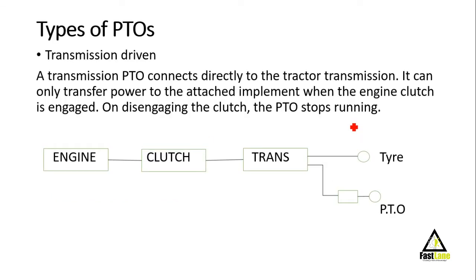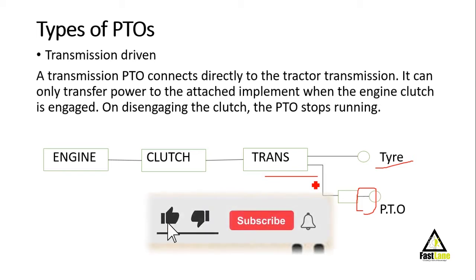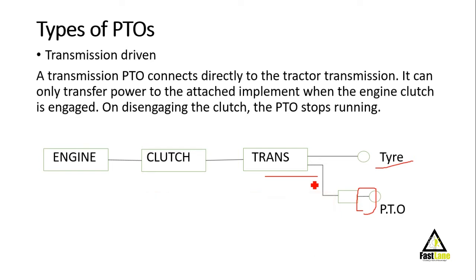There are types of PTOs, classified into three types. The first one is the transmission-driven PTO. A transmission-driven PTO connects directly to the tractor transmission. It can only transfer power to the attached implement when the engine clutch is engaged. On disengaging the clutch, the PTO stops running. Both the PTO and the tire are connected to the same transmission — the gearbox — so when the tractor is moving and the gear is engaged, the PTO will also automatically start moving.